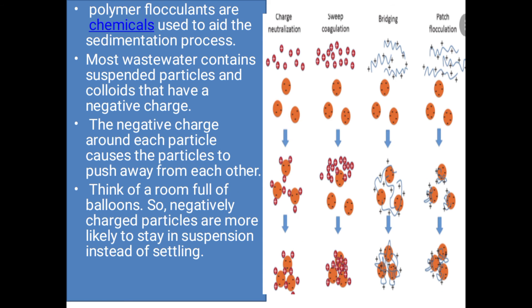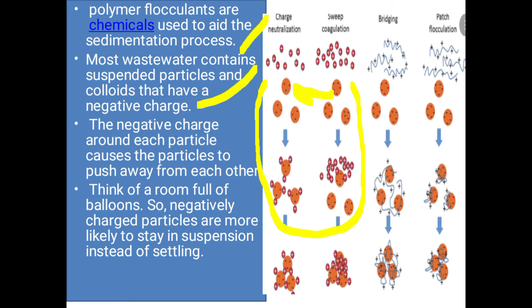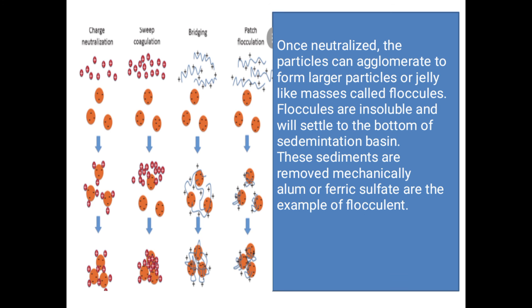Polymer flocculants are chemicals used to aid the process of sedimentation. Most water contains suspended particles and colloids that carry a negative charge. The negative charge around each particle causes the particles to push away from each other — they repel each other, just like a room full of balloons. Because of this, negatively charged particles are more likely to stay in suspension instead of settling.